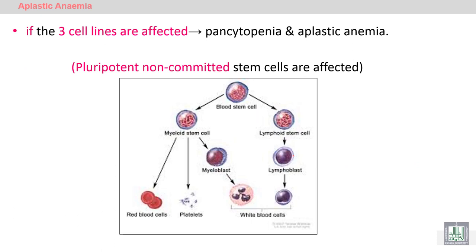For example, if the three cell lines are affected, there is pancytopenia and the condition will be aplastic anemia. This is due to a defect in the pluripotent stem cell — pluripotent means the earlier stem cell, also called non-committed, not specific to produce a specific type of cells. So if the abnormality is early in the pluripotent stem cell, it will lead to pancytopenia and aplastic anemia.